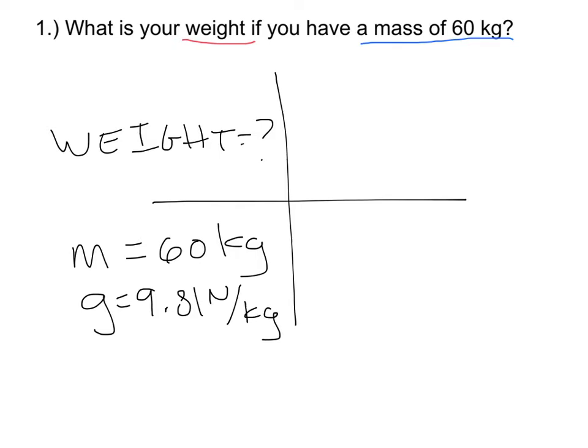Now if I look at the formula triangle and I cover up weight, what's left over is mass and gravity next to each other. So that tells me that weight is mass times gravity.